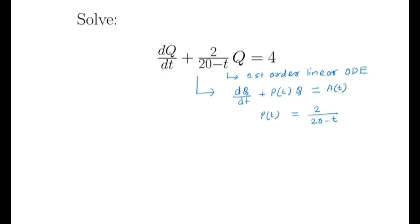Now we know the formula of integrating factor. So integrating factor is given by e^(∫p(t)dt). Now p(t) is 2/(20-t)dt.